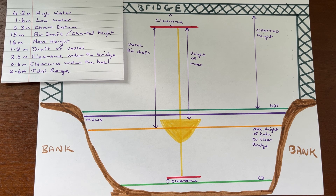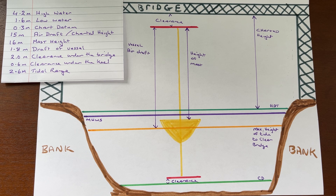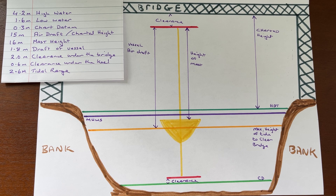We have a chart datum of 0.3 and our low water is 1.6, so 0.3 plus 1.6 is 1.9 meters. We draw 1.8, so in the absolute worst case scenario we can squeeze under the bridge with just 10 centimeters under our keel. If we arrive at low water we could go through at maximum air draft but might run aground. Arriving a little bit after low water, we can get through. We also have to consider tidal pressure calculations.